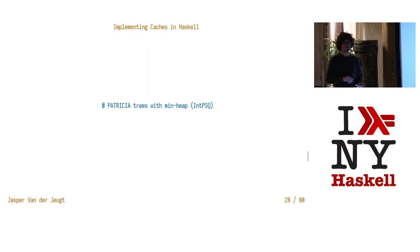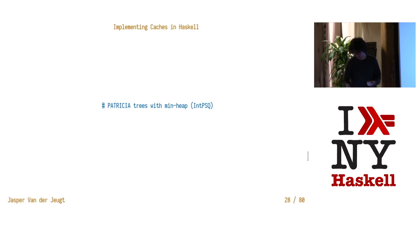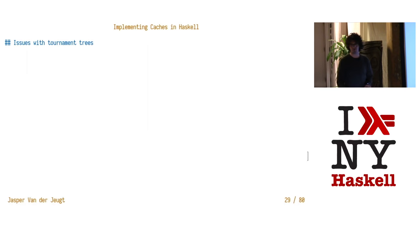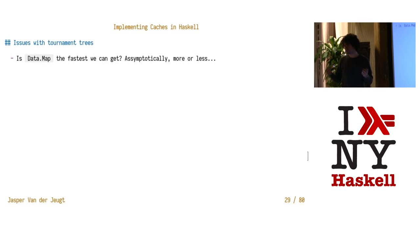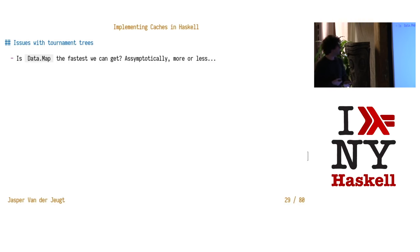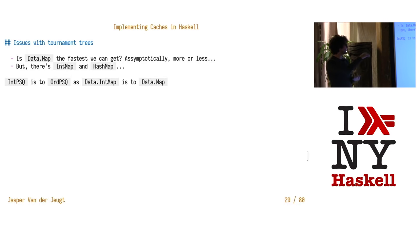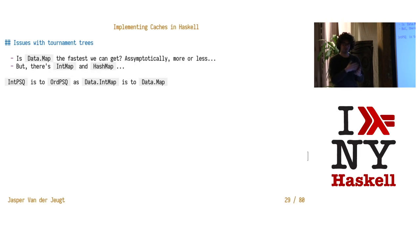That was the first pure data structure. Now we're going to switch to the second one, which for almost all use cases I've seen is a little more efficient but also a little bit more complicated. You can compare it to data.Map: asymptotically you can't really get much faster than data.Map, but you can improve the constant factors by quite a lot. IntMap and HashMap are also much faster than data.Map for many use cases. IntPSQ is to OrdPSQ as IntMap is to data.Map — it uses Patricia trees, which IntMap also uses, so the comparison is really solid.